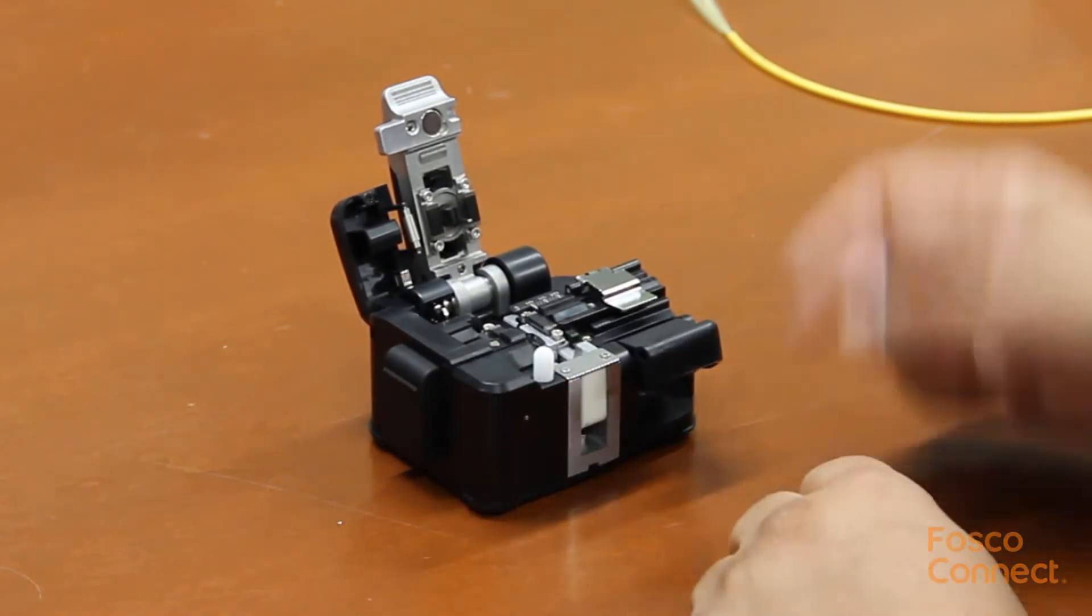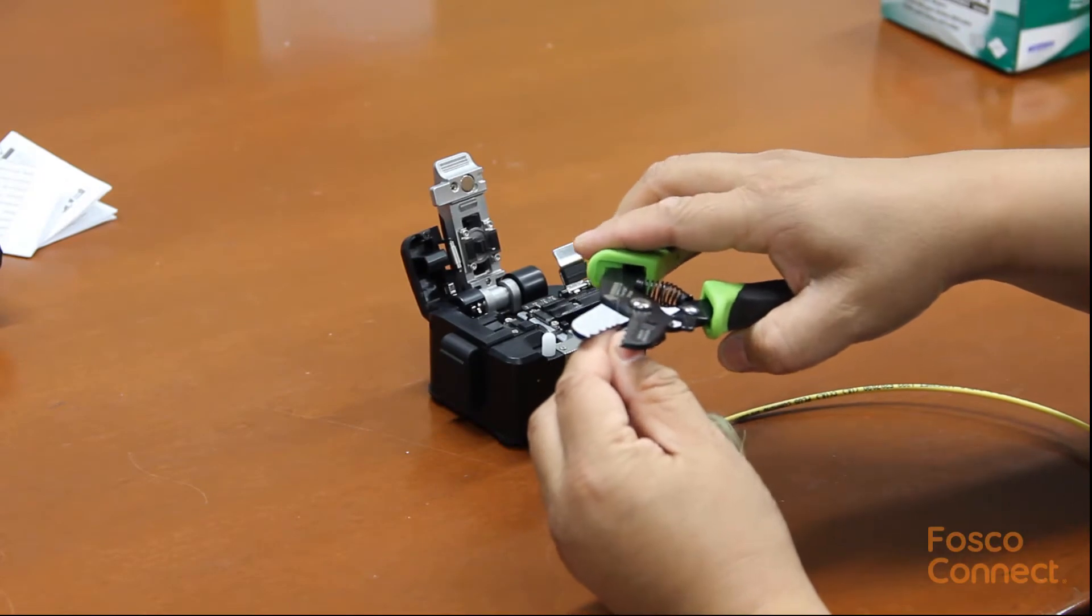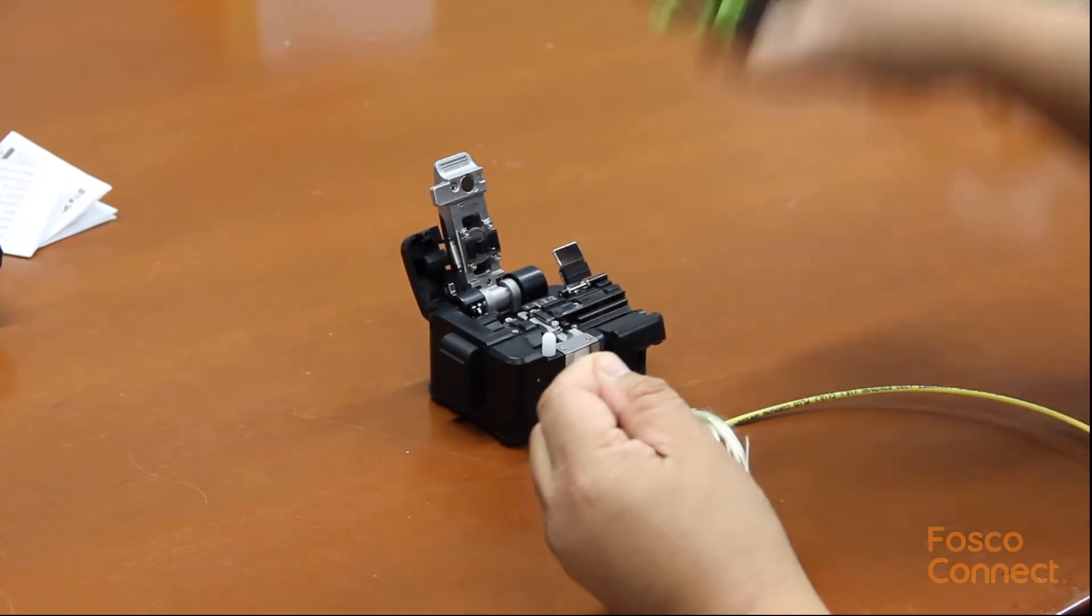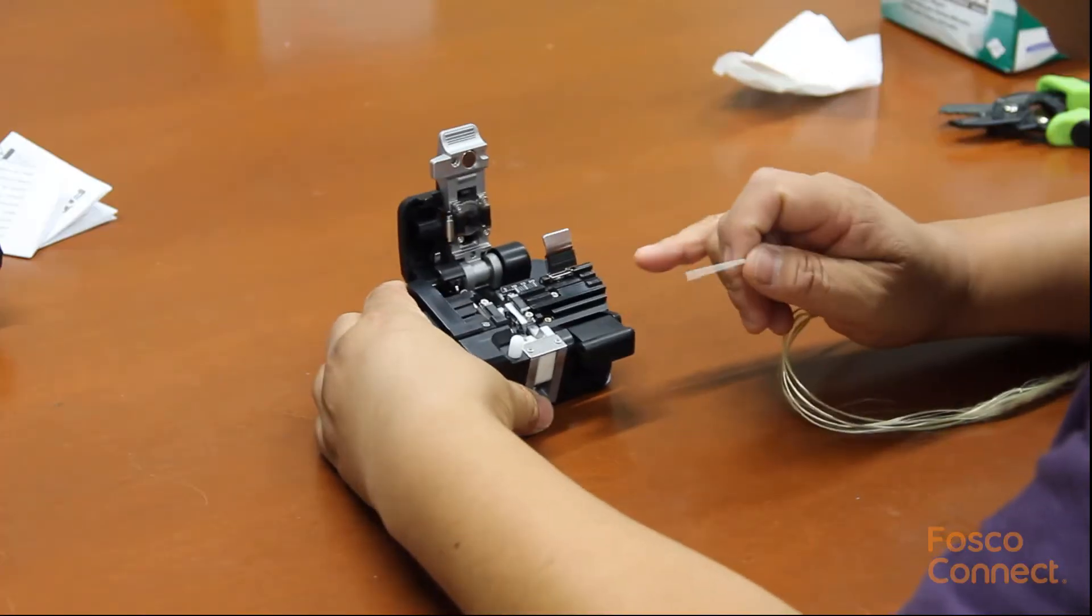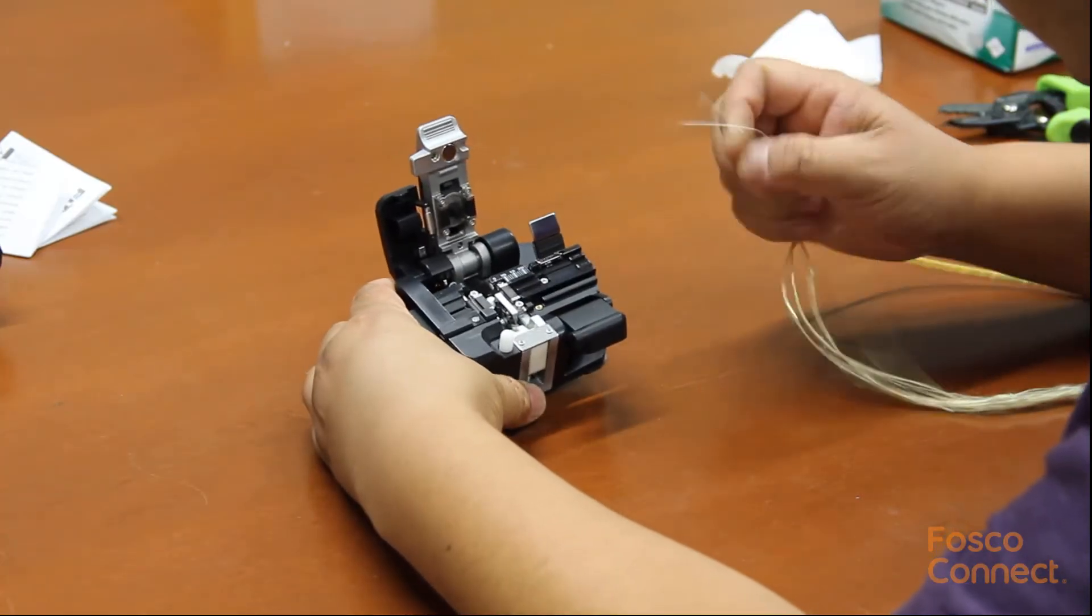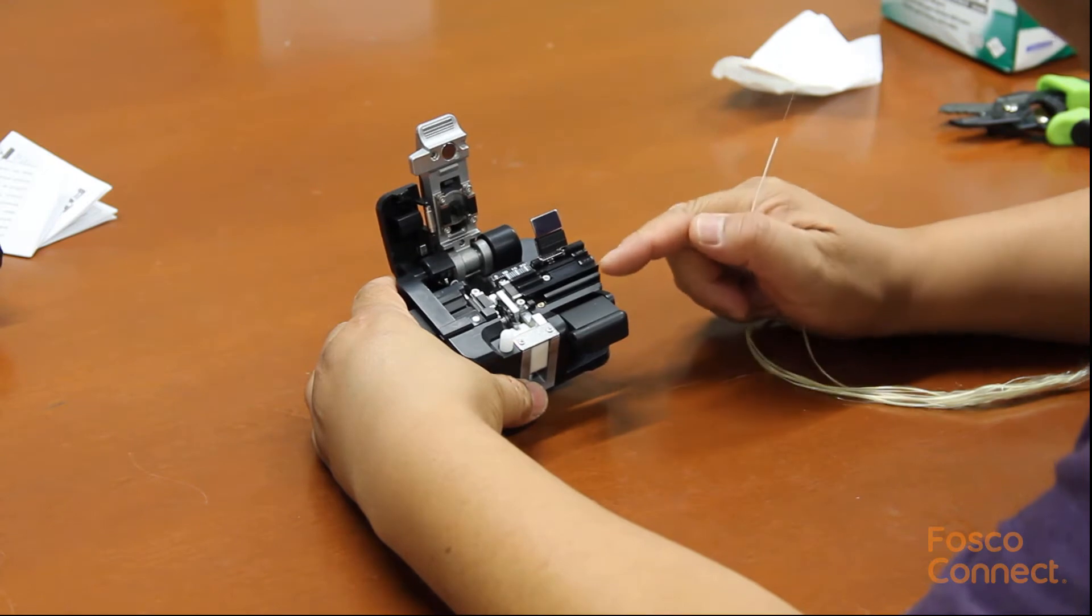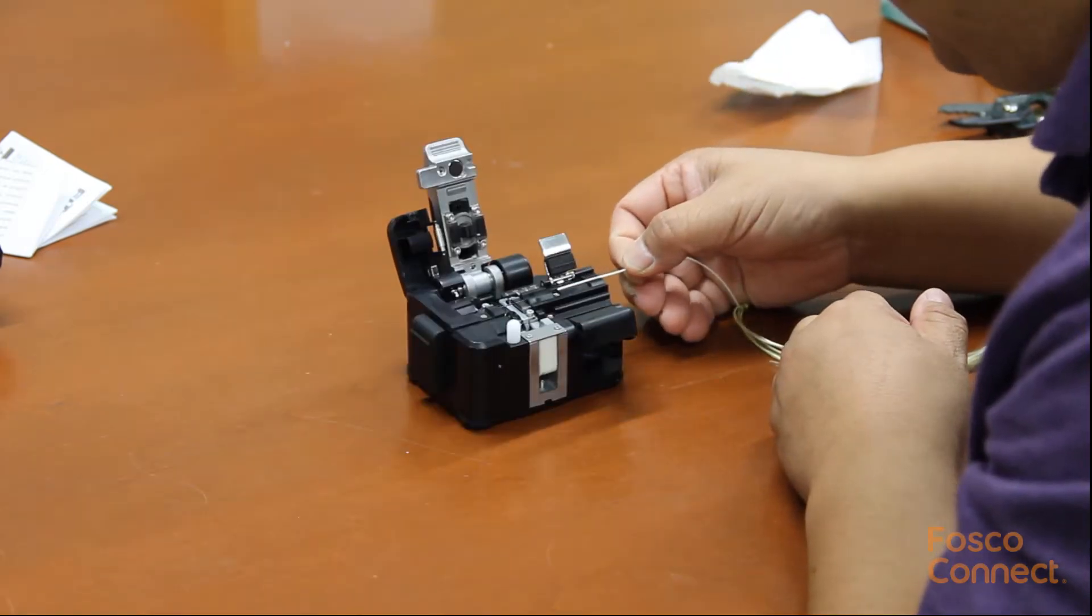So let's show the process. There are two slots at the fiber holder. One is a 900 micron, the other one is 250 micron. Let's put it at the 900 micron slot.